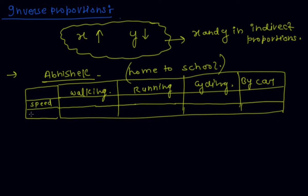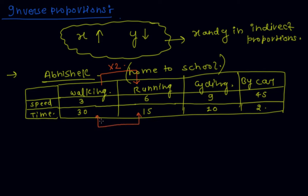The first quantity is speed and the second is time. By walking, speed is 3 km per hour, so the time taken is 30 minutes. If I increase the speed to 6 km per hour, then the time is 15 minutes. In the same manner, cycling speed is 9 km per hour and time taken is 10 minutes. By car, speed is 45 and time taken is 2 minutes. If you clearly observe, from the first to the second situation, speed is 2 times and the time is half — 30 minutes becomes 15 minutes.